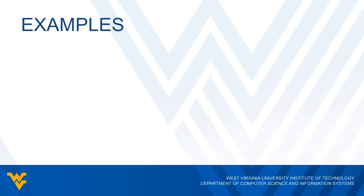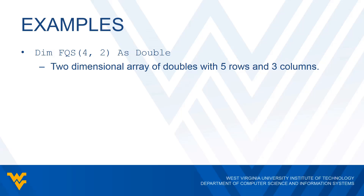Let's do a couple of examples of declaring two-dimensional arrays. Here's one called FQS — we see in the parentheses we have four comma two, and then we have As Double. So this is going to be a two-dimensional array of doubles. Since we have four as the first number, that means we have five rows. The two as the second number means we have three columns.